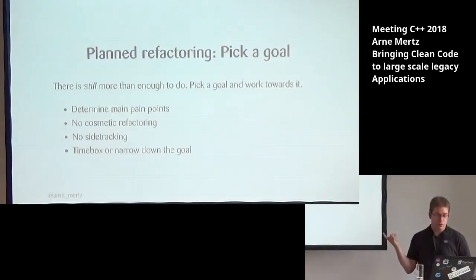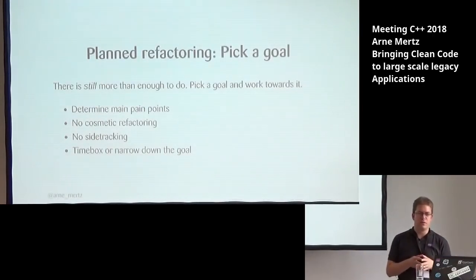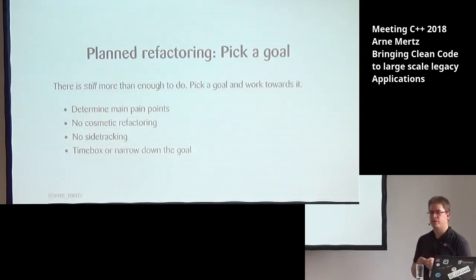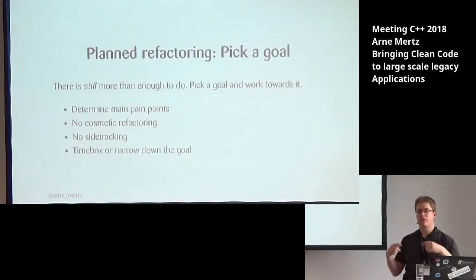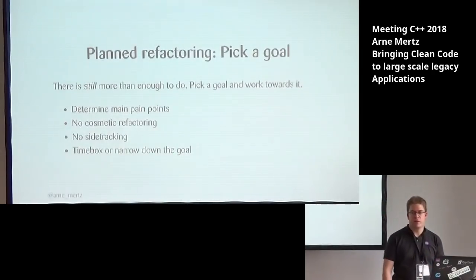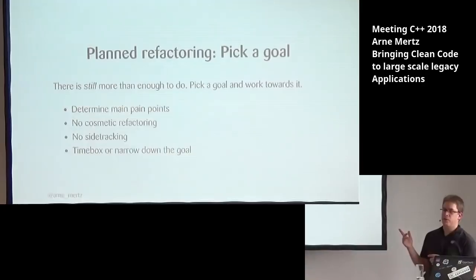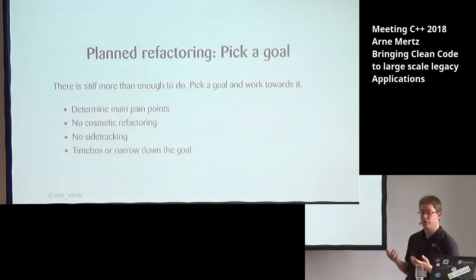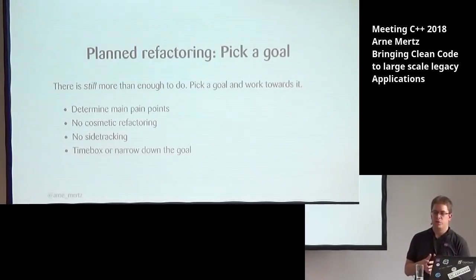Main pain points — no cosmetic refactoring. Don't start by fixing the indentation; that won't help much. Fix the actual functionality, fix the actual structure of the code. No side-tracking — when you look at one point in code, you don't see one problem, you see 20 problems, and you can't fix them all at once. Pick one problem and fix that one, then pick the next. Because if you have multiple construction sites at once, usually none of them gets finished. Also keep in mind that we have other work to do — fixing bugs, introducing new features. We have to timebox our refactoring work and narrow it down so we actually get it done in a short amount of time.